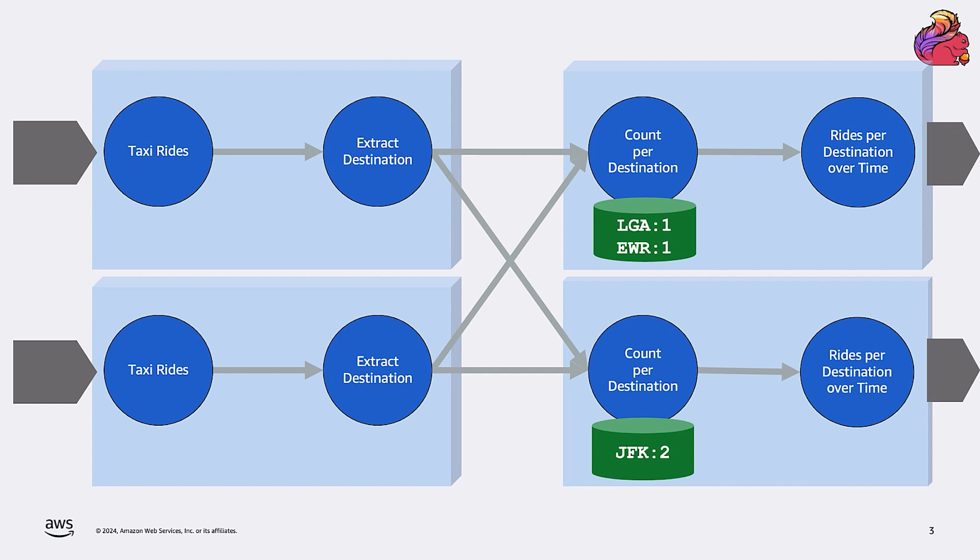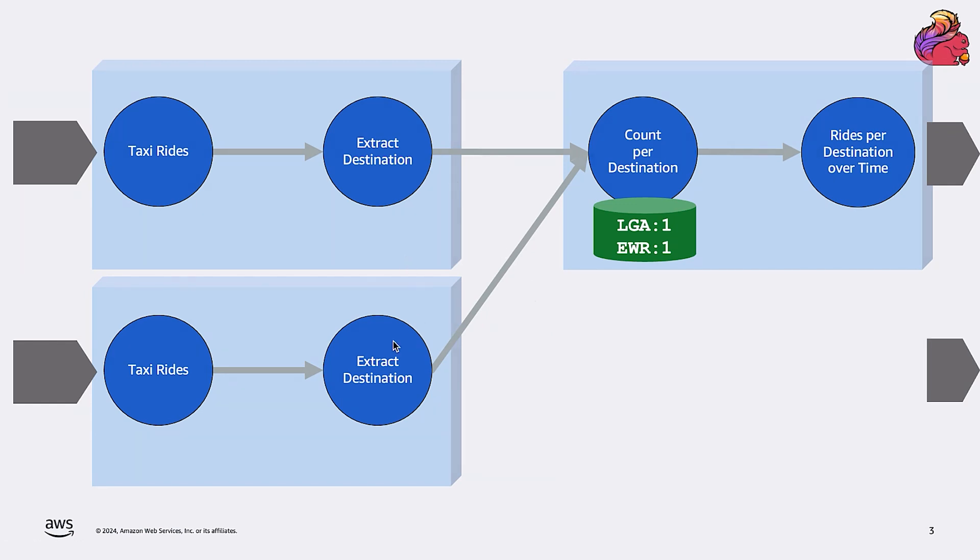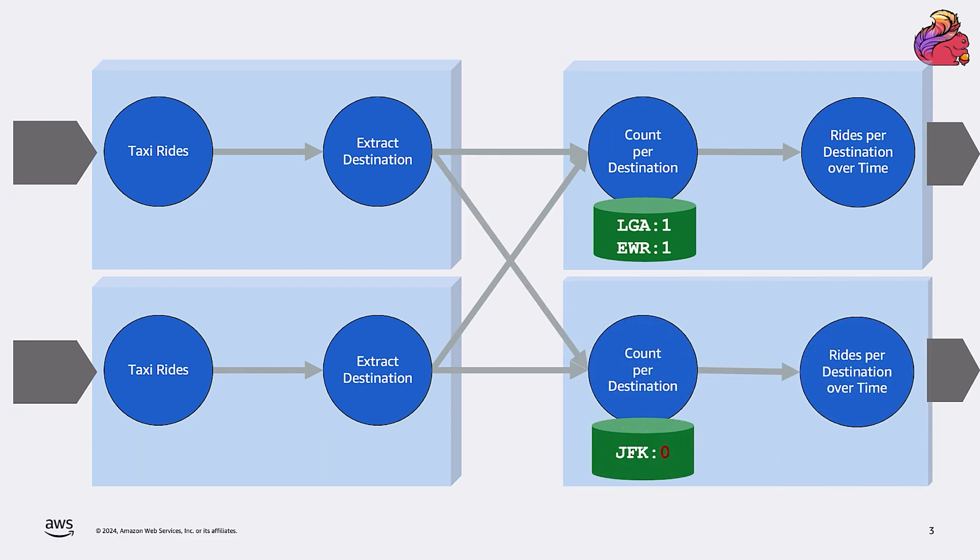But without replication, we might have a problem. So if one of the nodes crashes, the state held on the particular machine that we lost is also lost. We literally lost the count of the trips to the airports that were handled by the failed node. And if we replace the node and restart the application, the count for those airports will just restart from zero. However, the output is no longer correct, and our application is not really resilient.